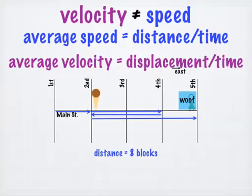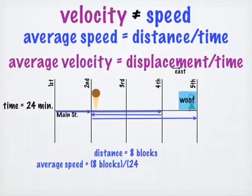Including the time it took me to stop at the gelato shop, let's say the total trip took me 24 minutes. My average speed during the trip, then, would be eight blocks divided by 24 minutes, or one-third of a block per minute.